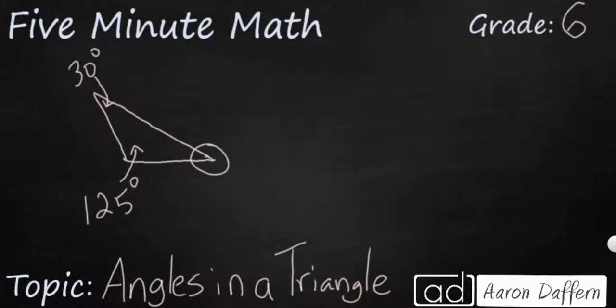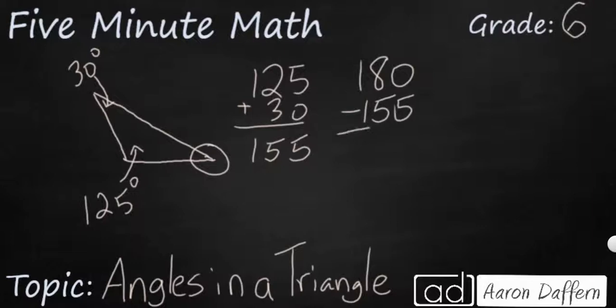So what we need to do is we need to add up the two angles that we already know, the 125 and the 30, and that's going to get us 155. And remember the sum of the angles of any triangle is going to be 180. So we're going to subtract the 155 from our 180 and we are going to get 25 degrees. So you can say with confidence that this smaller angle here is 25 degrees.